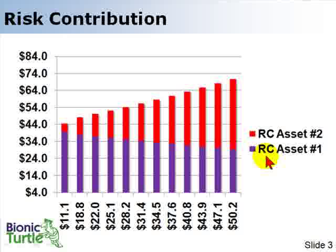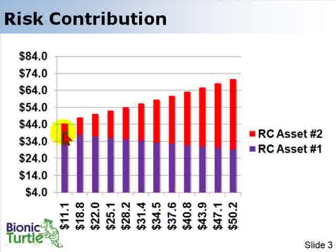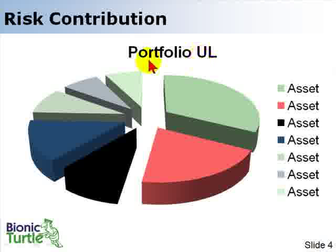My example is going to be a portfolio consisting only of two credit assets — these could be loans or bonds. Here in purple is the risk contribution of one asset, and in red, the risk contribution of the second asset given their respective exposures. If we add the risk contributions together, we get the portfolio unexpected loss, which here is about $44. The risk contributions are additive for portfolio unexpected loss. As I move to the right, I'm increasing the exposure of asset number two, and so its risk contribution increases, but still the sum of the risk contributions is portfolio unexpected loss. If the total pie represents portfolio unexpected loss — and remember, unexpected loss is the estimated volatility of potential loss in value of the portfolio around the expected loss.